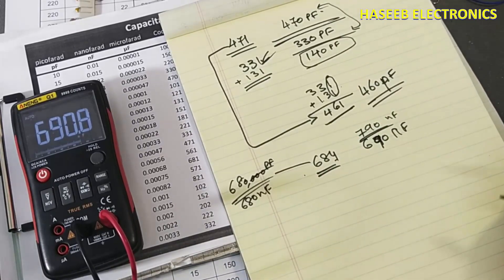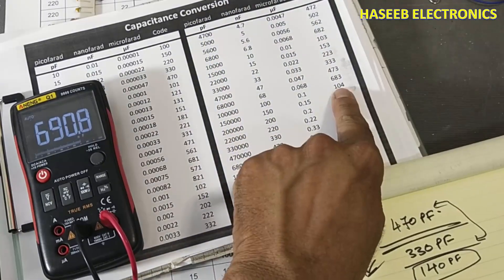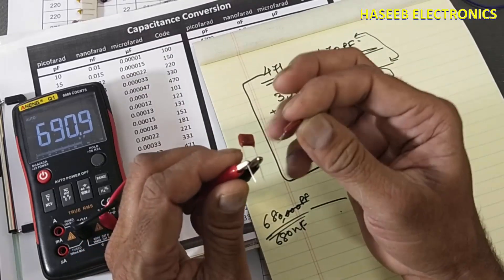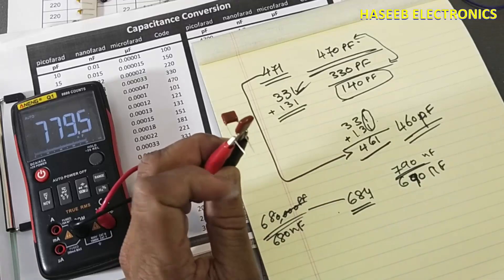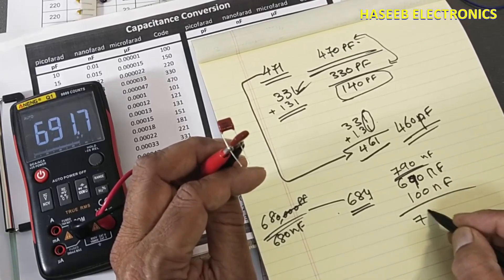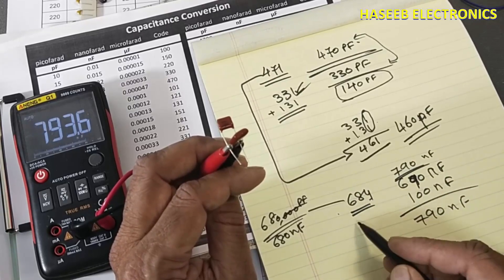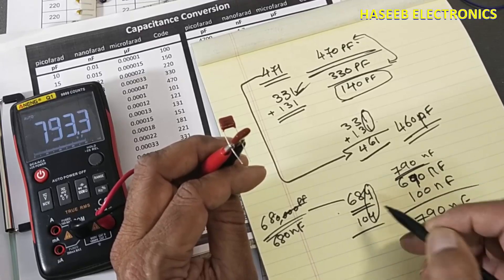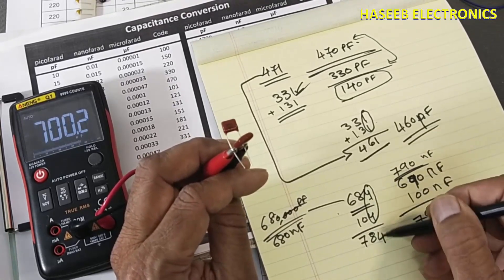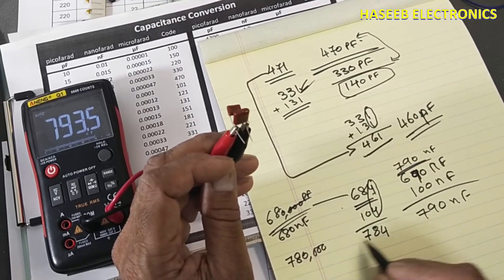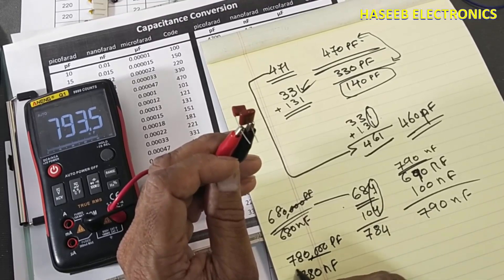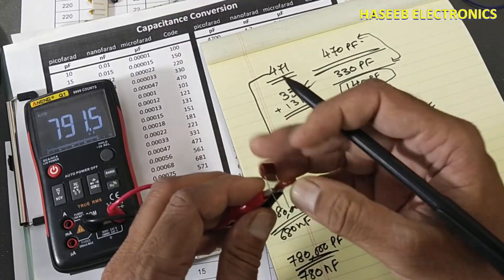We need 100 nanofarad more. 100 nanofarad equals 10,000pF, and its code is 104. We already have the 684 (≈680nF) and we will connect the 104 (100nF) in parallel. Its value becomes 780nF. How did we add the codes? 684 + 104: forget the last digit — 68 + 10 = 78 — the last digit stays 4, so the combined code is 784, which is 780,000pF (780nF).